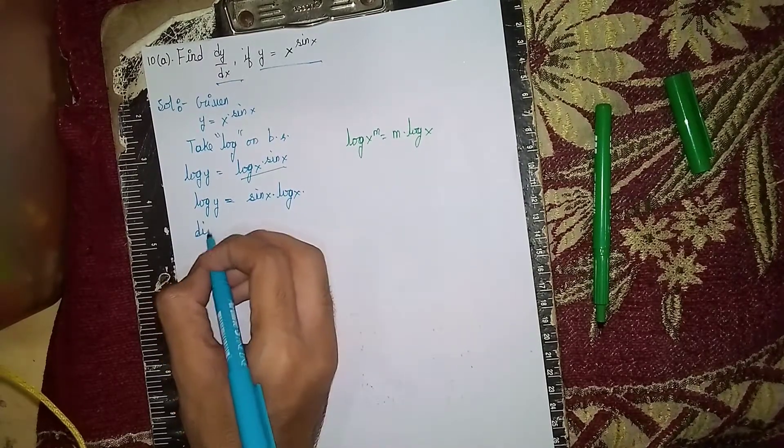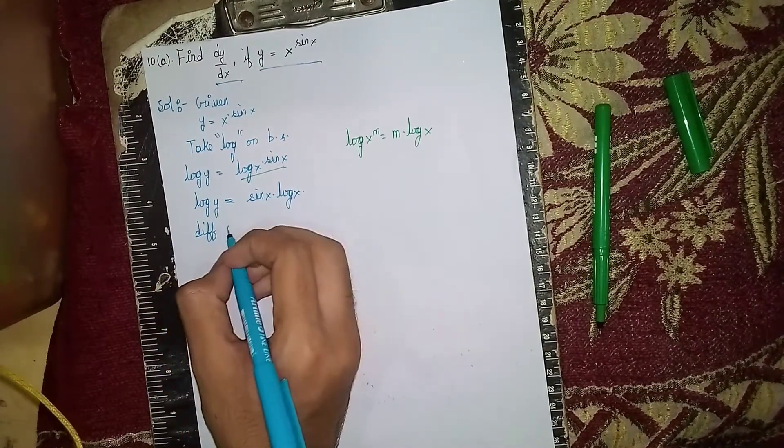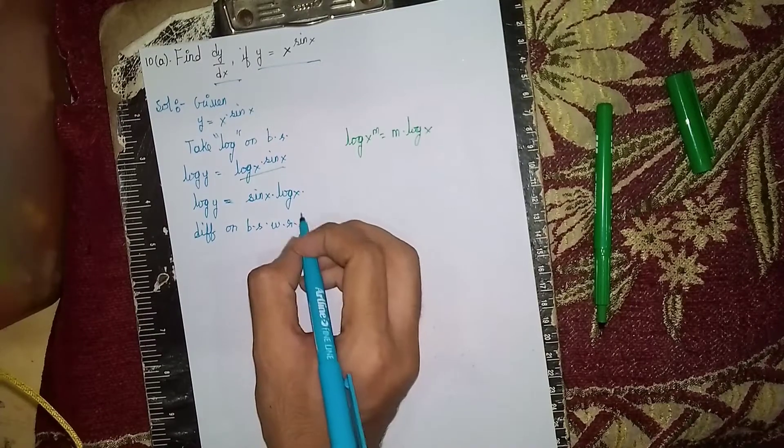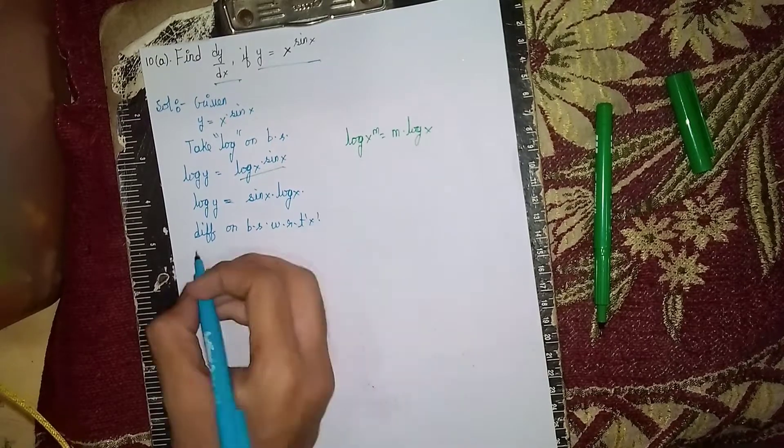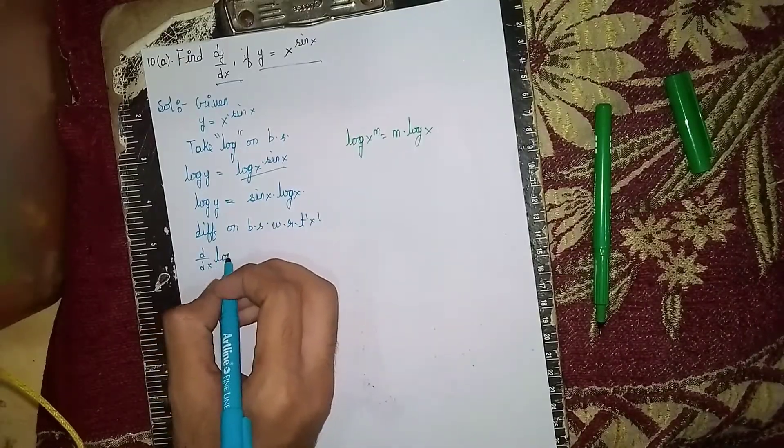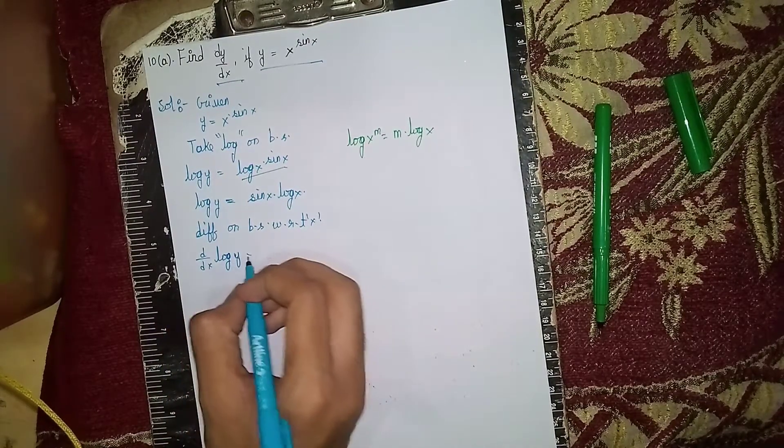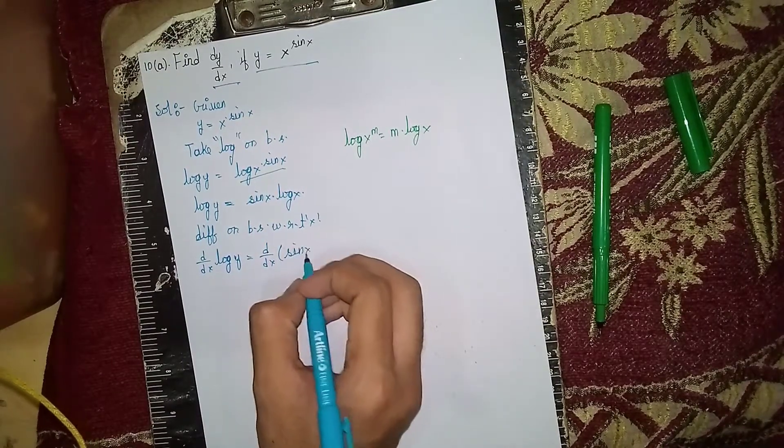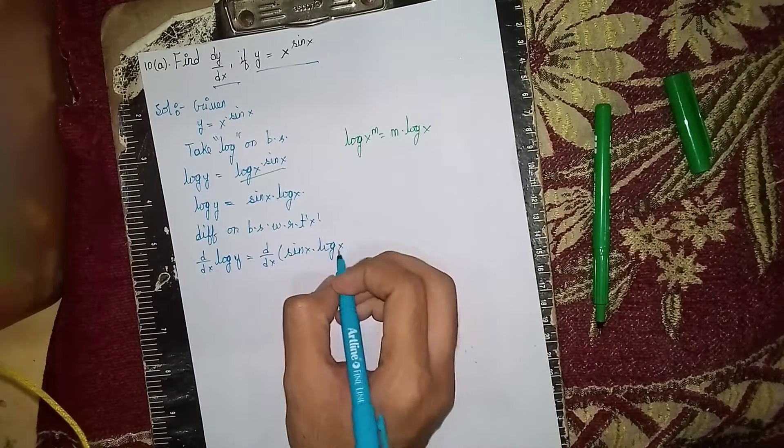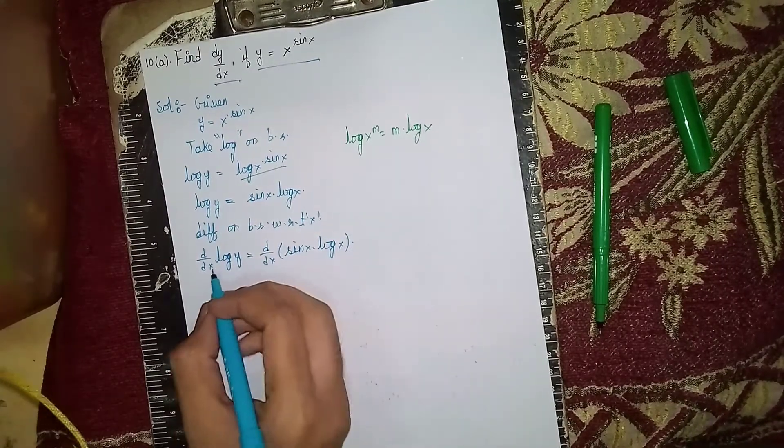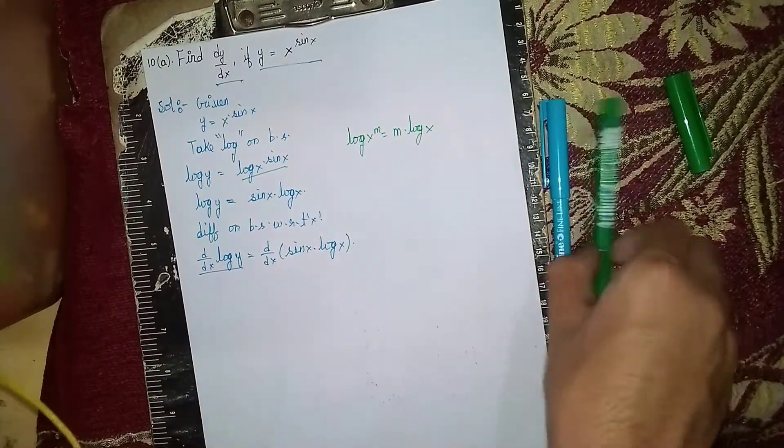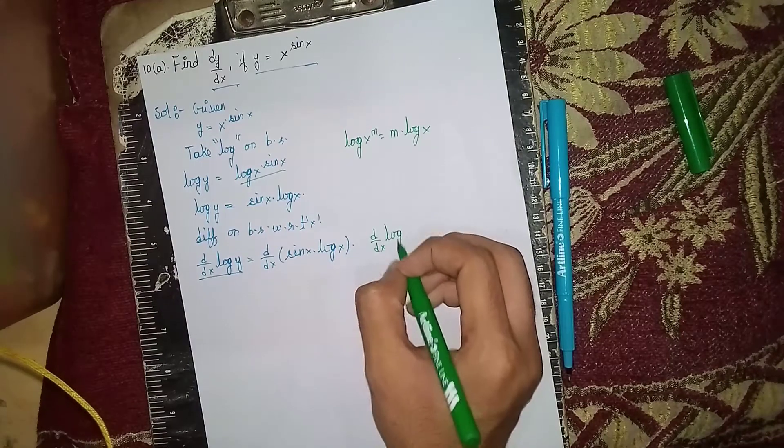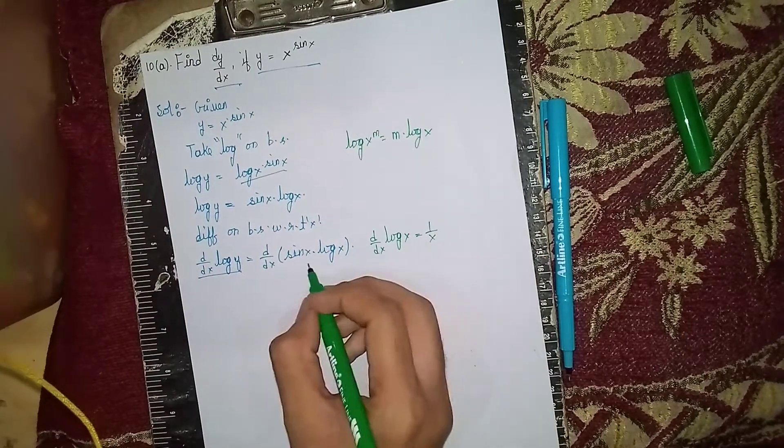Now differentiate on both sides with respect to x. d/dx of log y is equal to 1 by y times dy/dx. The derivative of log x is equal to 1 by x.